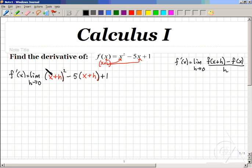From this expression, the formula tells us next to subtract f of x itself. So minus x squared minus 5x plus 1. And finally, take this entire expression and divide that through by an h.